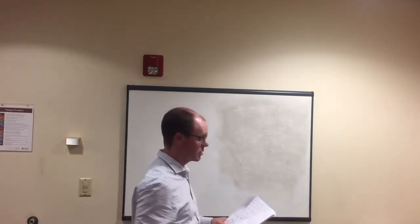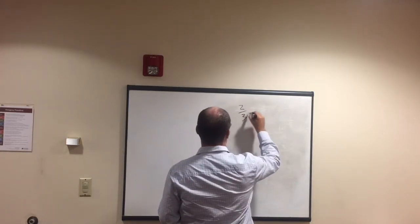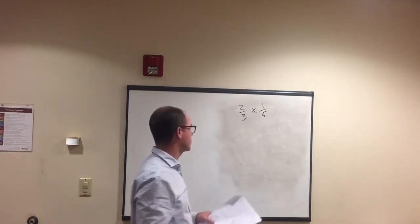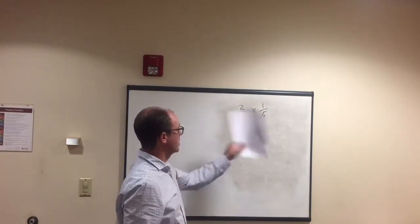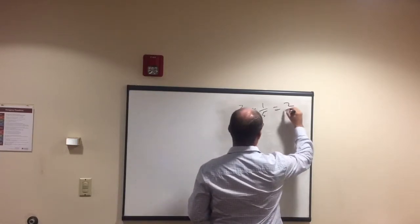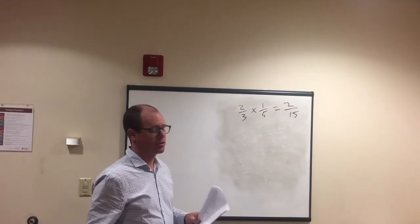Okay? Multiply. Multiply is probably the easiest one. Alright, so let's look at that. So, I guess we're sticking with two thirds and one fifth. Two thirds times one fifth. So, in this case, you can just multiply right across. Two times one is two. Three times five, fifteen. There we go. Two out of fifteen.